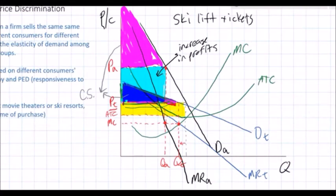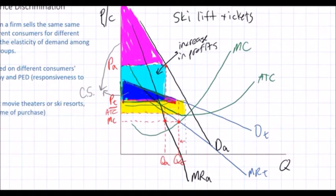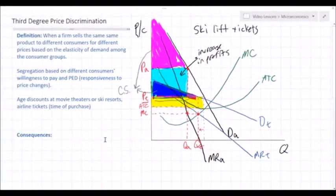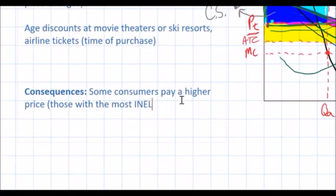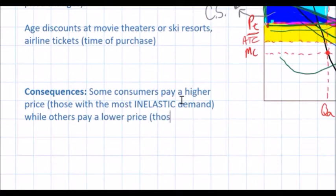It would help to rewind the video to see how I illustrated the profit-maximizing prices and quantities before the areas of consumer surplus and profit were labeled. Some consumers pay a higher price — those with the most inelastic demand — while others pay a lower price — those with the most elastic demand.